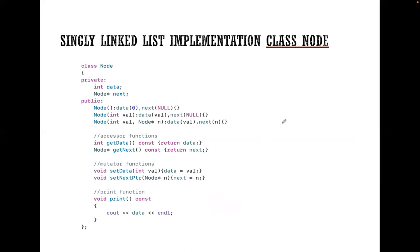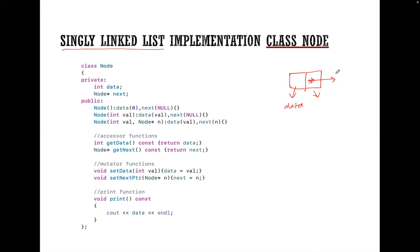Now let's talk about implementation of class node. This particular linked list is known as a singly linked list. Here we are showing the implementation of class node for singly linked list. It is called singly linked list because in each node we store value or data and we have only one pointer, and that pointer points to the next node. So each node will point to only one node — that's why it is known as a singly linked list.